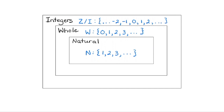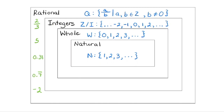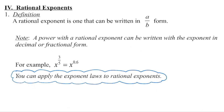We've looked at powers with natural, whole, and integral exponents. We're now going to look at powers that have a rational exponent — one that can be written as a fraction. We know that a rational number is any number we can write in a-over-b form, so a rational exponent is any exponent that can be written as a fraction in a-over-b form.